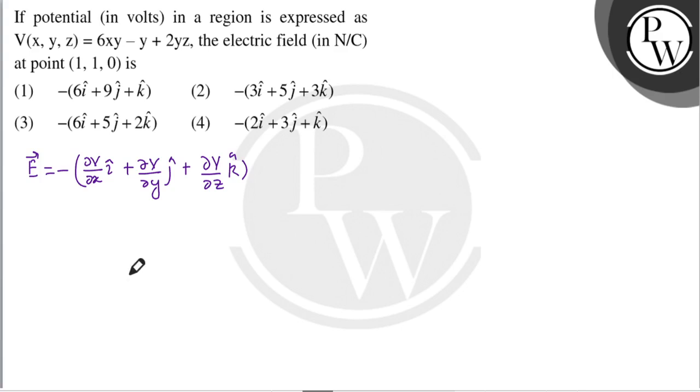Ye partial differentiation hai potential with respect to x, y and z. We have to calculate del V upon del x which is equal to 6y minus 0 plus 0 which is equal to 6y. Aur y coordinate ki value hai hamare paas 1, to yeh ho jayega 6.